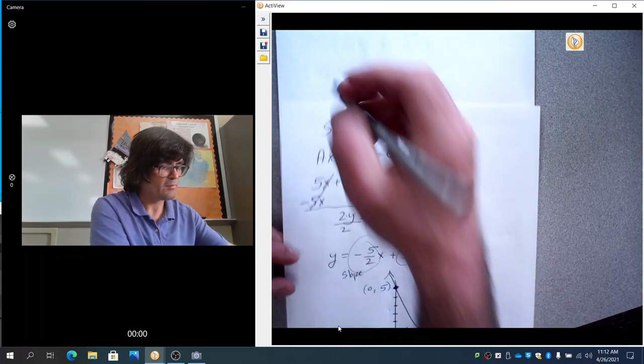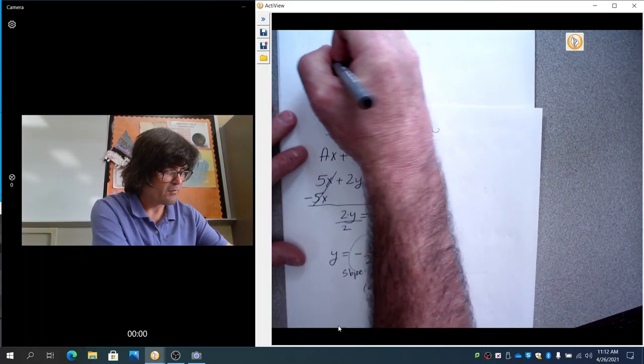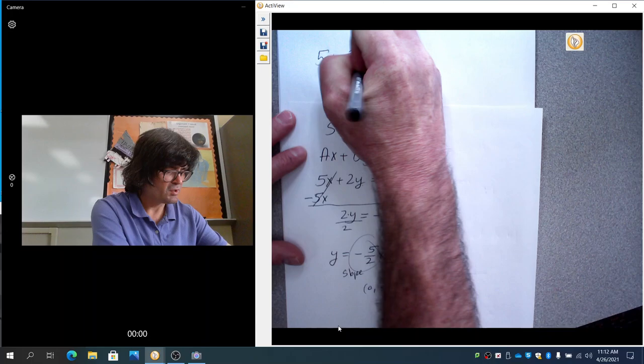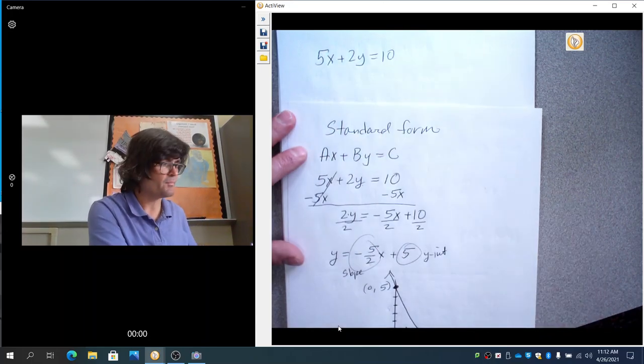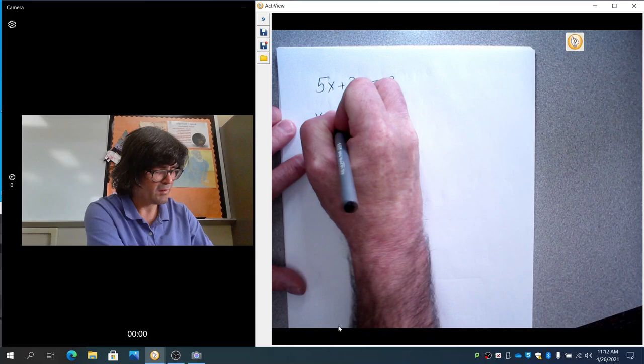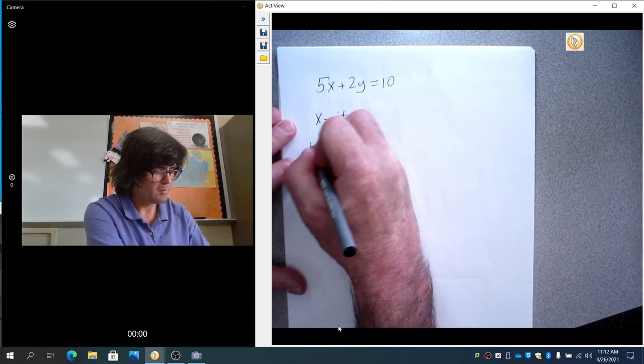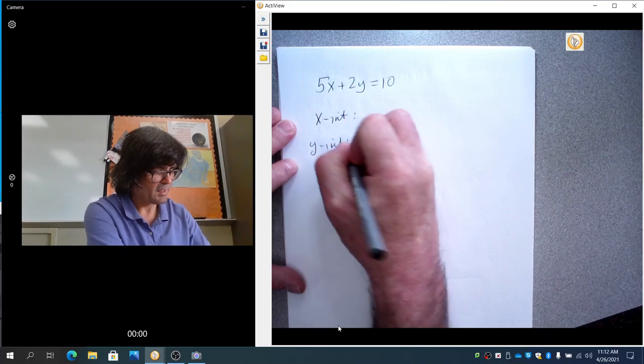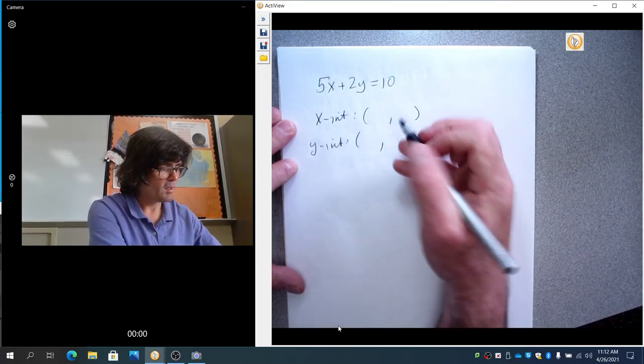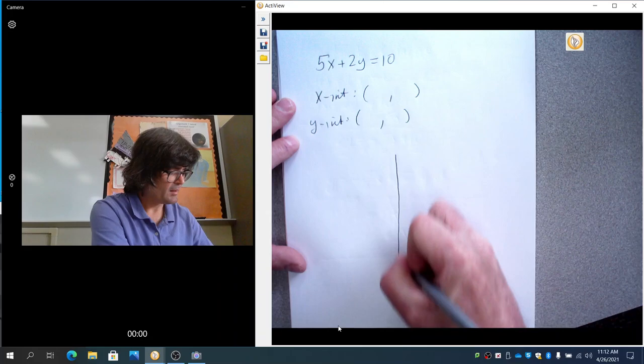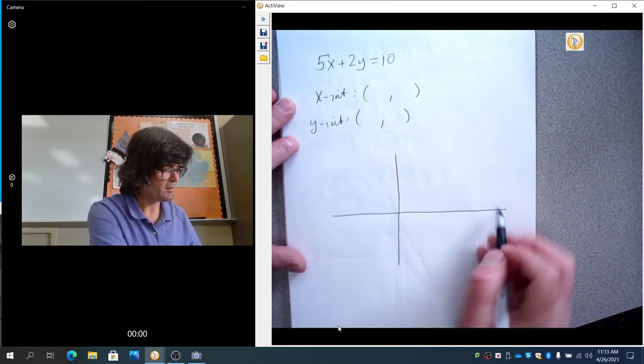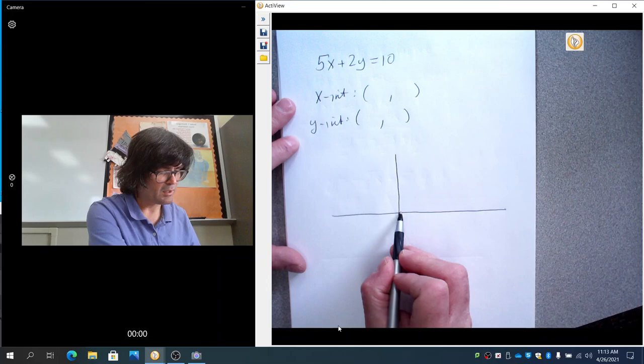There's one other way you can do a standard form equation. 5x plus 2y equals 10. And start with that. What you can do is you can ask to find the x-intercept and the y-intercept. And what I know about any graph is if I'm on the x-axis right here, if I'm on the x-axis looking for an x-intercept, the y is always 0.